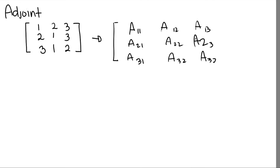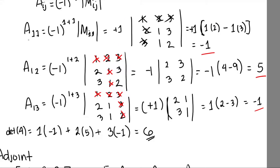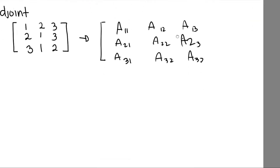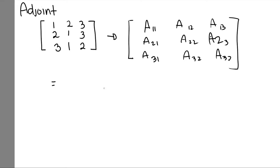We already computed A_11 = 1, A_12 = 5, and A_13 = −1 from our earlier calculations, so those go into the first row of the cofactor matrix.